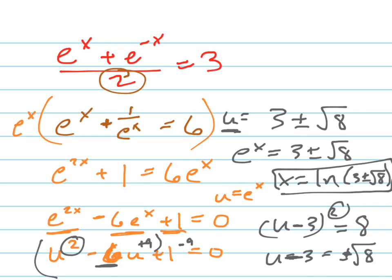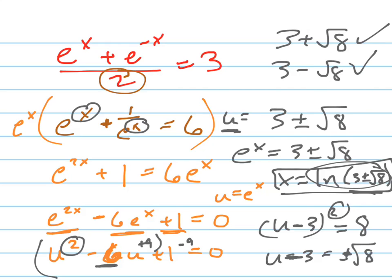Now, do both of those answers work? I don't know. You've got to plug them in. Plug these ones in for x. First of all, are they both positive? That's the first question. 3 plus or minus the square root of 8. What's 3 plus the square root of 8? The square root of 8 is smaller than 3, right? So 3 minus the square root of 8 is still a positive number. So these both can work, potentially.